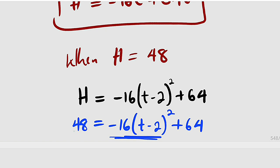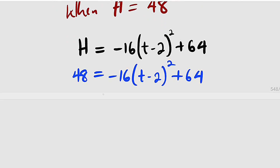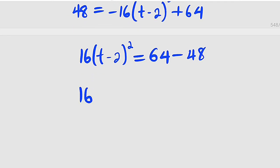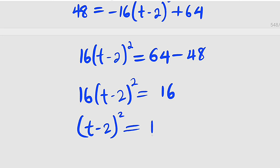h is now 48 equal to negative 16 multiplied by t minus 2 all squared plus 64. Let us take this term to the left-hand side and take this one to the right-hand side. We are just going to switch them. As this term crosses the equality sign, it becomes positive: 16 times t minus 2 all squared. If this one crosses over, it becomes negative. So we have 64 minus 48, and 64 minus 48 is 16. So we have 16 times t minus 2 all squared equal to 16. Divide both sides by 16. You have t minus 2 all squared equal to 1.